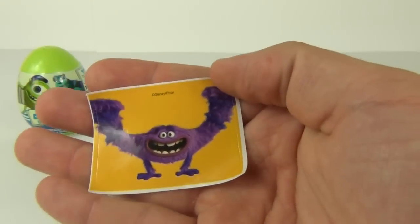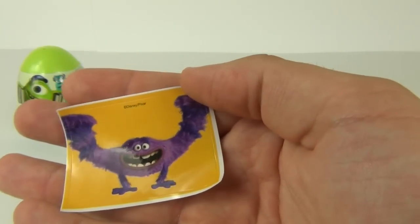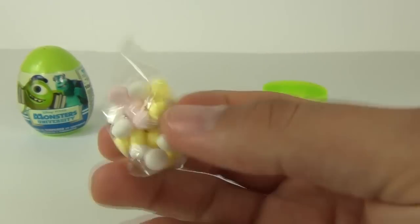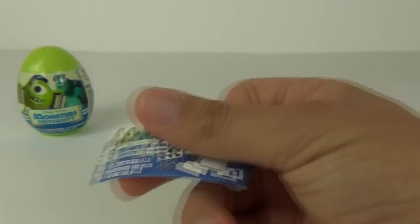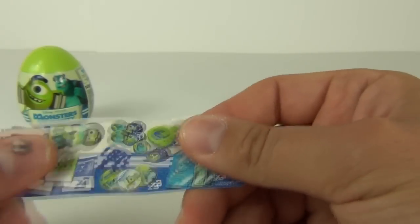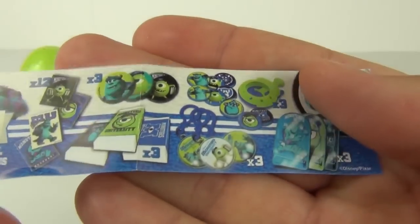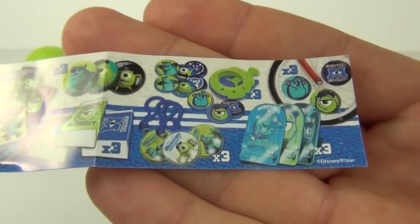We get a sticker as well and this one is of Art looking very comical. There are your little sweets inside in all different colors and we get this checklist as well so you can check off all the toys that you get. It shows you all the toys you can get inside.